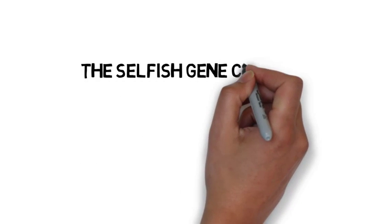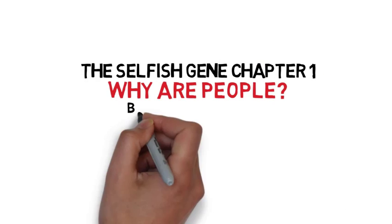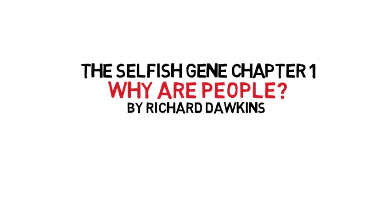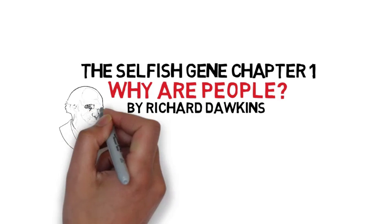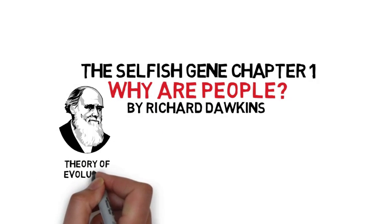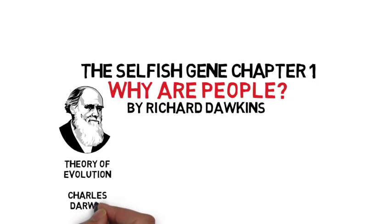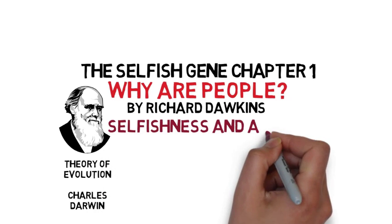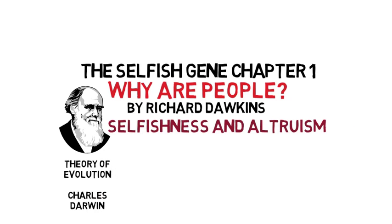The Selfish Gene, chapter 1 by Richard Dawkins. The Selfish Gene is an exploration into the consequences of the theory of evolution by Charles Darwin, especially the biology of selfishness and altruism.